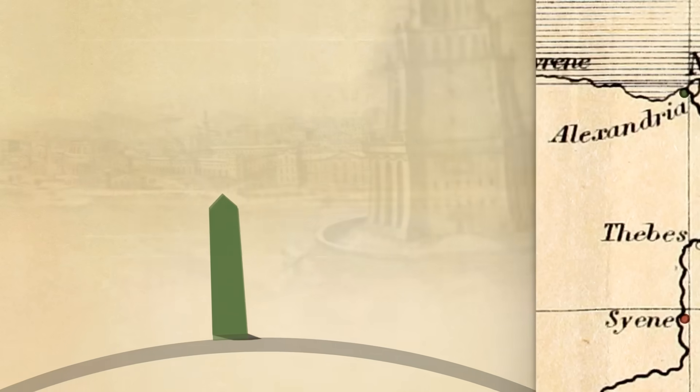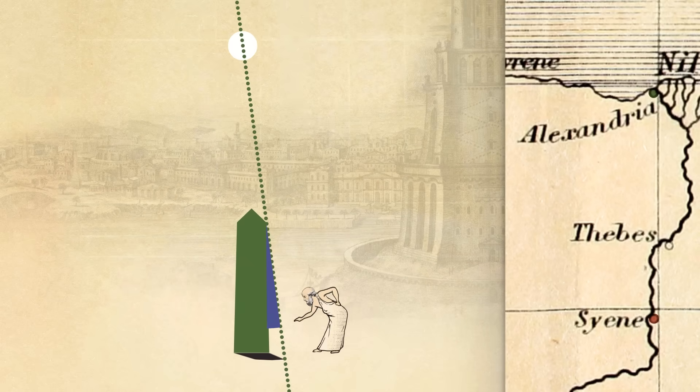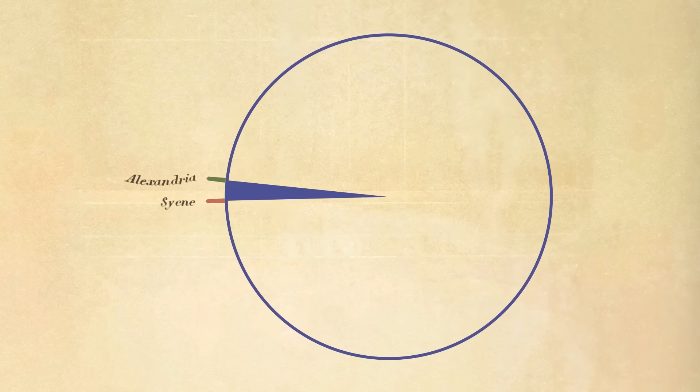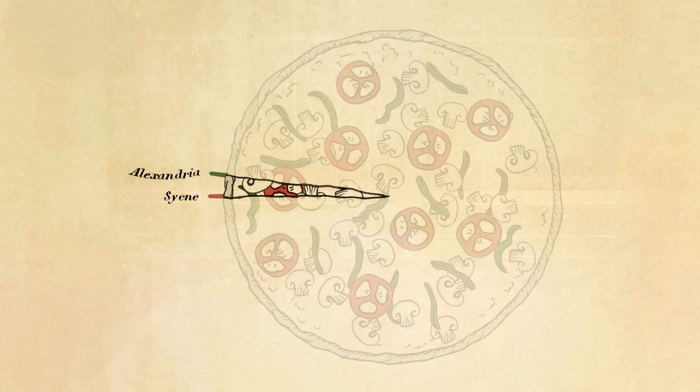So the angle formed by this shadow is the same as the angle between these two cities. So at noon on the summer solstice, Eratosthenes went out and measured this angle as 1/50th of a circle. So he knew the distance from Alexandria to Cyene was 1/50th of the way around the Earth. So he was already in Alexandria. He could get the angle of the shadow there knowing that there was no shadow in Cyene. And from that, calculate the angle of the tip of the pizza slice in between those two cities. Exactly.